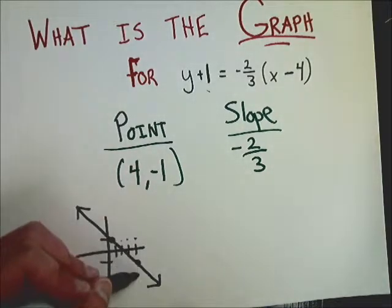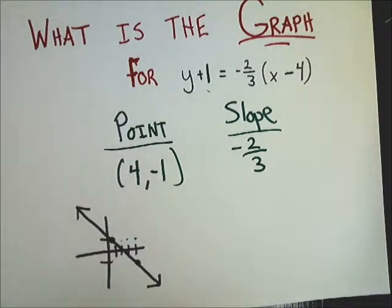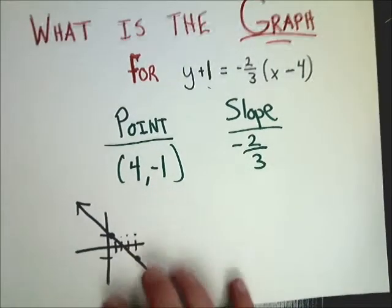And if you wanted to do down 2, so you go 1, 2 and over 3, that's fine also. It doesn't matter. Up and right and down and left. Same basic idea. So in this case, that's what the graph looks like.